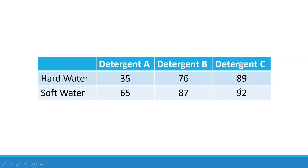We want to check: first, is there any significant difference in whiteness according to the detergent — detergent A, B, and C? Second, is there any difference in whiteness according to the type of water — hard water or soft water? Third, is there any interaction effect — when a particular water combines with a particular detergent, does it produce more or less whiteness in the cloth?